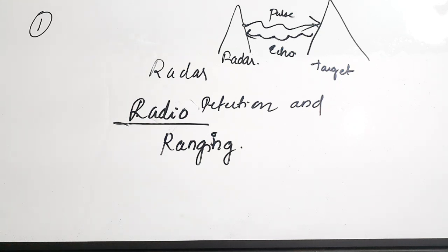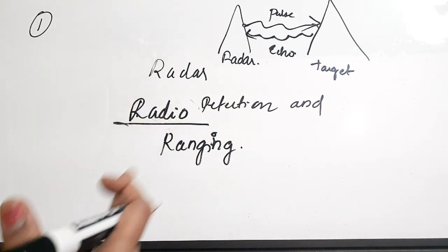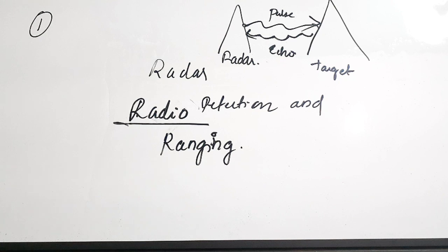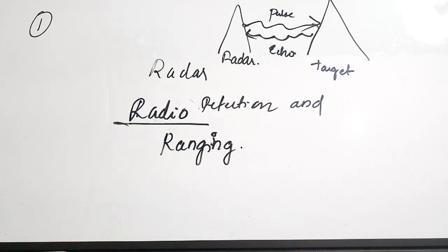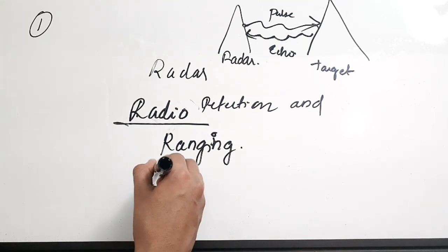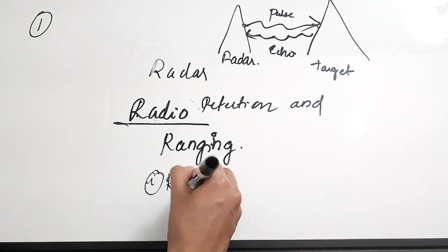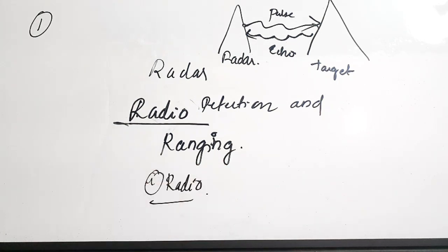From the expansion of RADAR itself — Radio Detection and Ranging — it is clear that radar sends and detects radio waves only. Radar systems use radio waves and are used to determine parameters like range, angle, and velocity of the target. So the correct answer to question one is option A: radio waves.